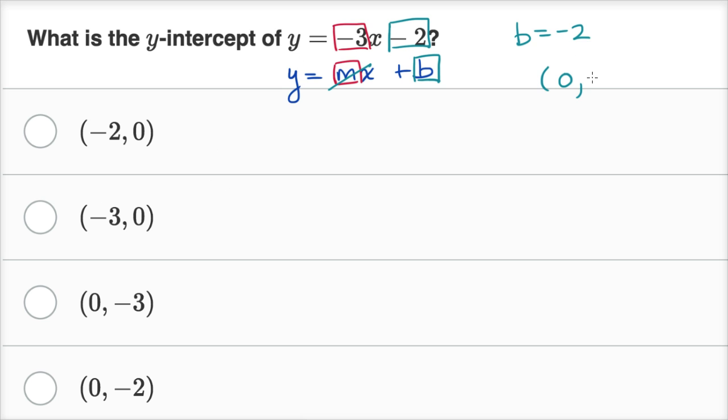Well, when x equals zero, y equals negative two. And you could see that in our original equation. Again, if x was zero, this term would go away, and y would be equal to negative two. So zero comma negative two. So it would be that choice right over there.